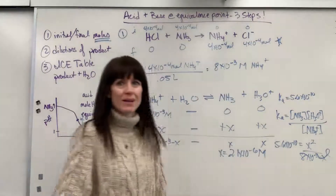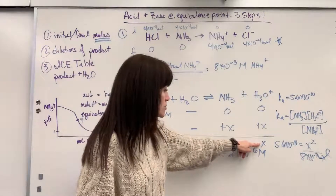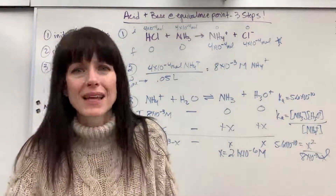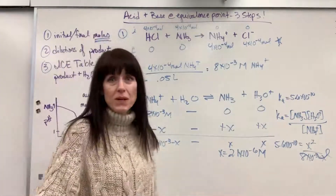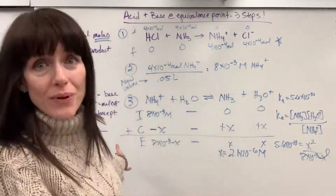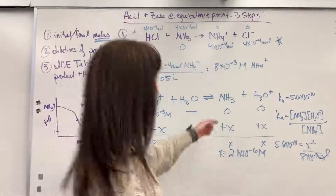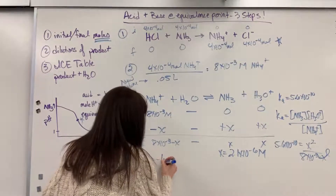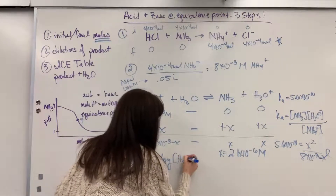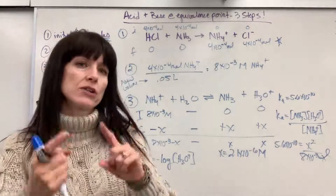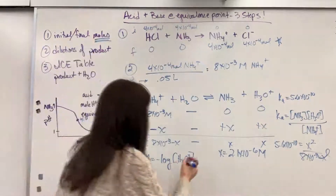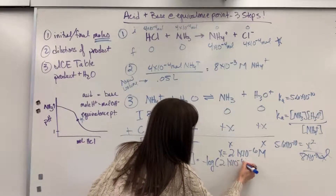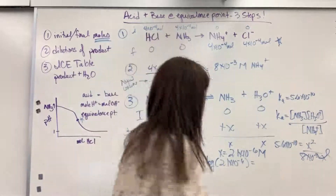X = 2.1×10⁻⁶ molar. You take that number and subtract from 8×10⁻³ — it rounds to 8×10⁻³ because that number is so small in comparison. The whole point of all that is to find pH. Notice we found the concentration of the hydronium. pH = −log[H⁺] = −log(2.1×10⁻⁶) = 5.67.